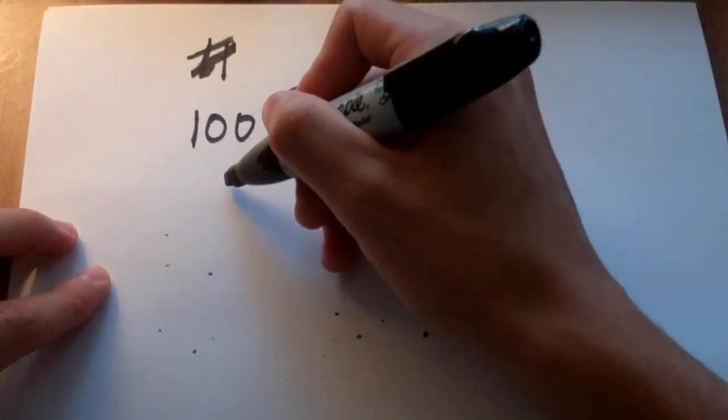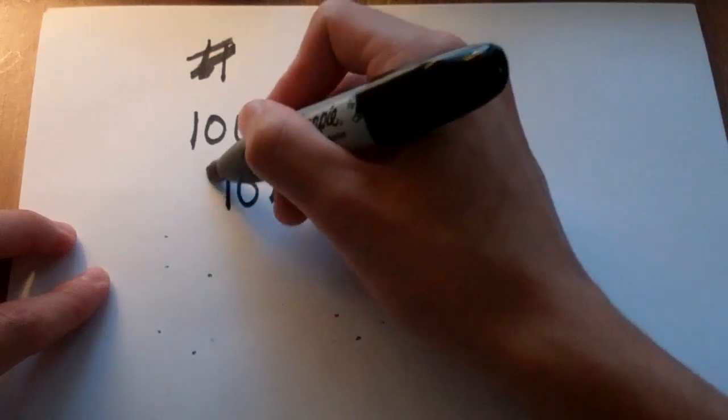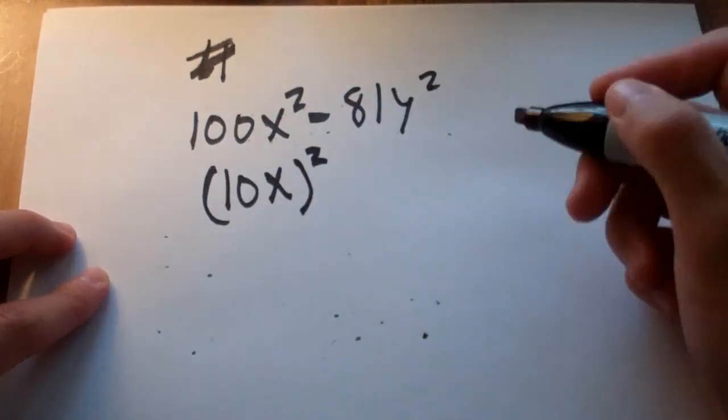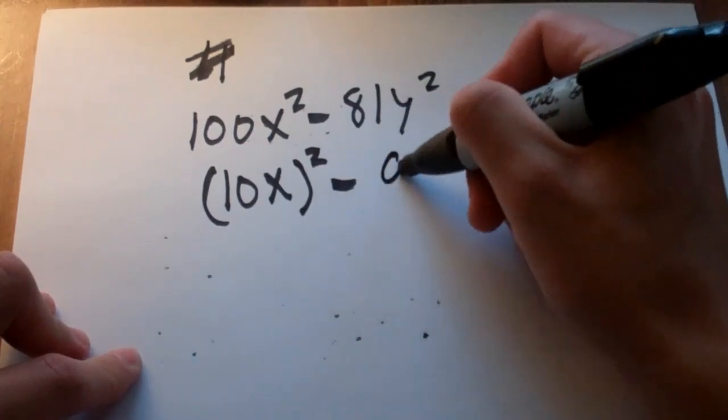Well, I'm going to do this. I'm going to say, well, 10 x squared minus, what squared will give you 81? Well, 9. 9 will.